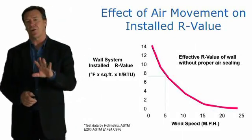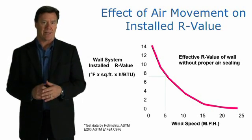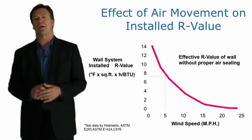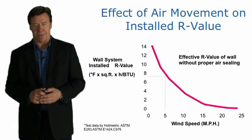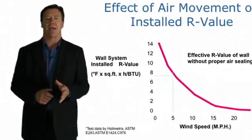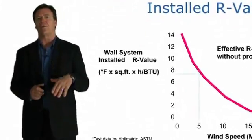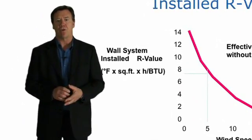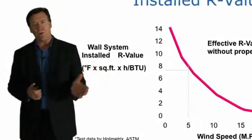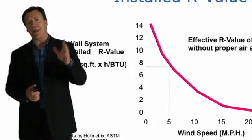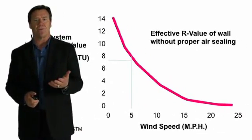This chart shows the impact of air infiltration on insulation. It's from a study done in the 1990s by a laboratory called Holometrics. The vertical axis shows R-value from 0 to 14, and the horizontal axis shows wind speed. As wind speed increases, you can see how dramatically the R-value of the insulation drops.